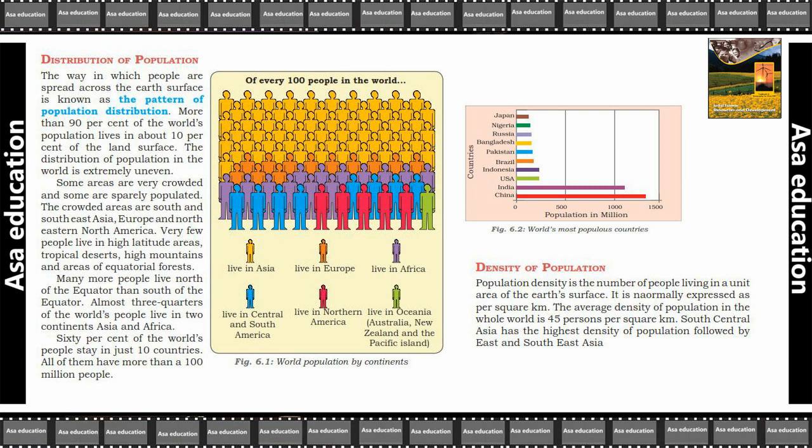South Central Asia has the highest density of population, followed by East and South East Asia.